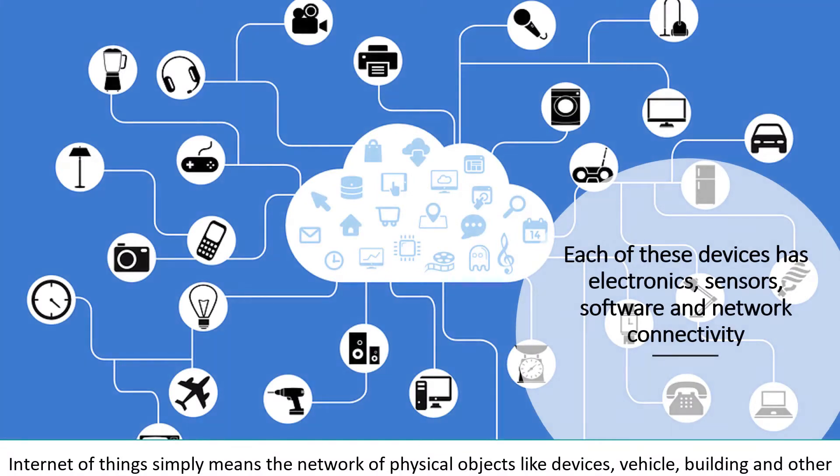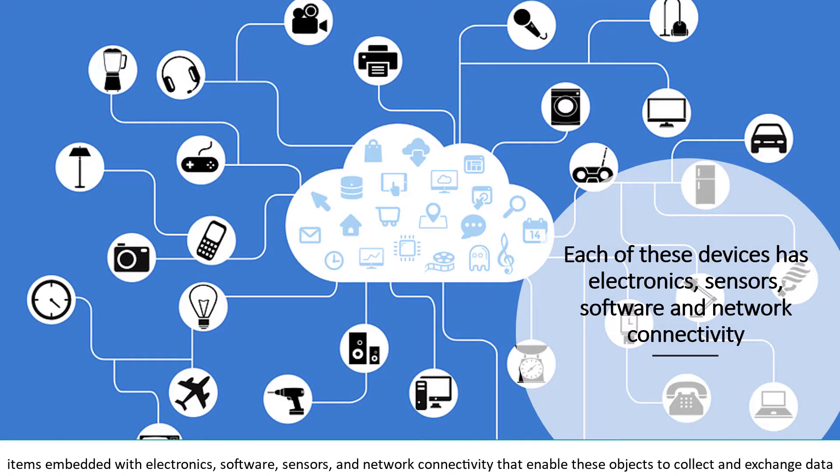Internet of Things simply means the network of physical objects like devices, vehicles, buildings and other items embedded with electronics, software, sensors, and network connectivity that enable these objects to collect and exchange data.